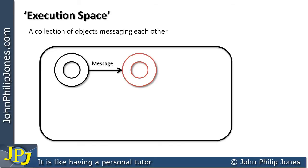Let's look at another scenario. The black object is sending to the red object the hours worked in one week and the rate of pay per hour. The red object is able to calculate the gross pay, but it's not able to calculate the net pay. It needs another object to assist it, because that object might have details on the amount of tax that's payable. So the red object creates another object, shown in green, and sends it the gross pay. The green object does all the necessary deductions and passes back to the red object the net pay, which the red object then passes back to the black object.